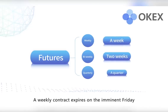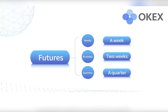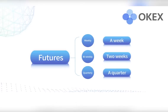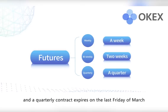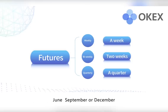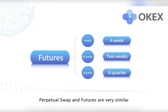A weekly contract expires on the imminent Friday, a bi-weekly contract expires on the next Friday, and a quarterly contract expires on the last Friday of March, June, September, or December. Perpetual swap and futures are very similar, except for the different expiration period.